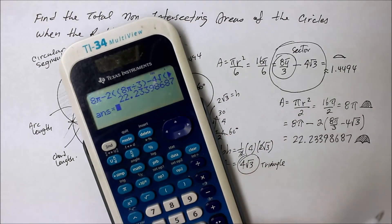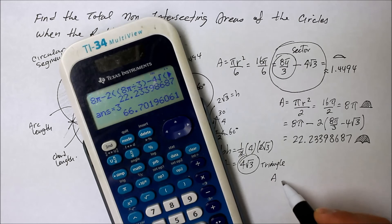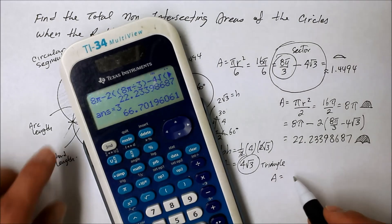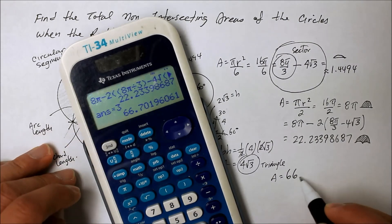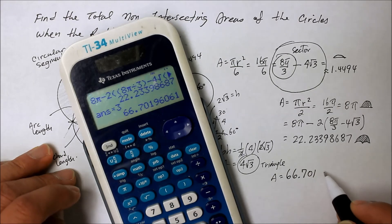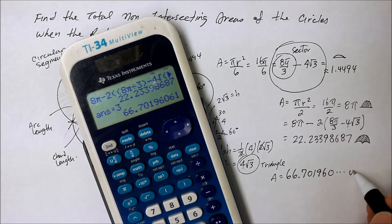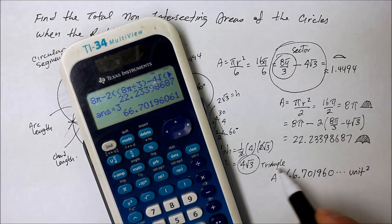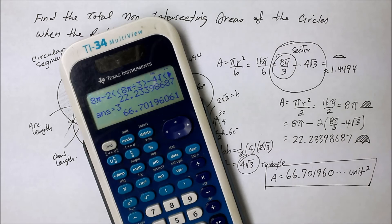So times that nasty number times three. So the total of those becomes 66.701960 blah blah blah unit squared. Did you get all that? Did you get all that?